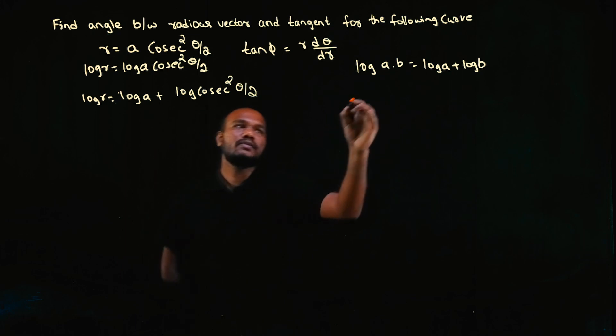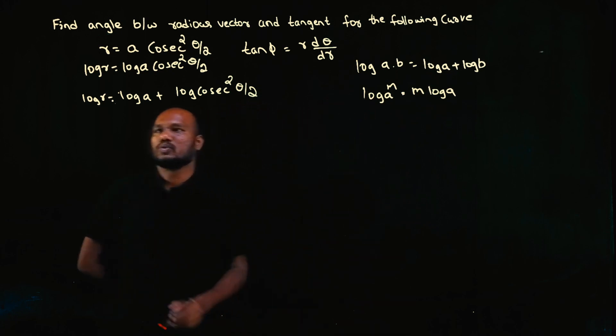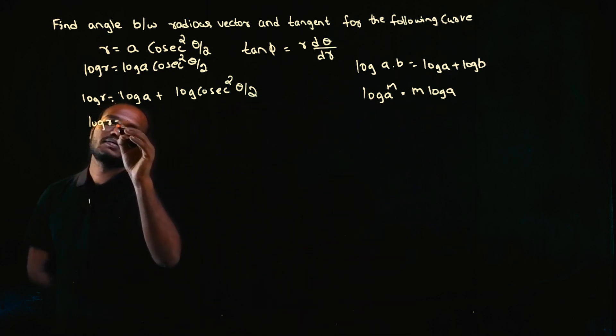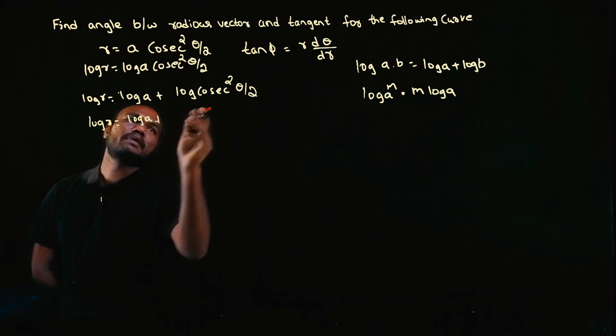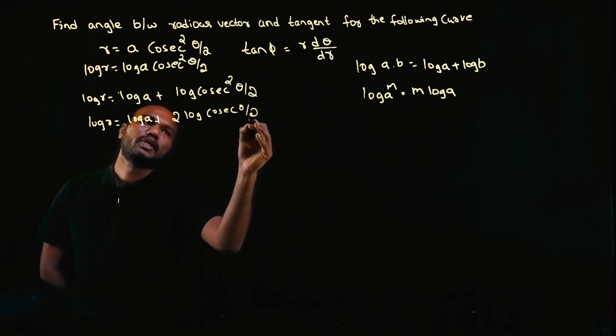And also we know log(aᵐ) equals m·log a. The exponent will come in front. So log r, we can't do anything. Log a, we can't do anything. But here 2 will come in front: 2·log cosec(θ/2).